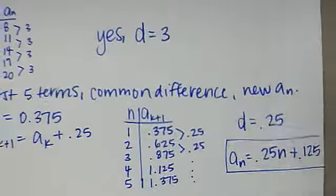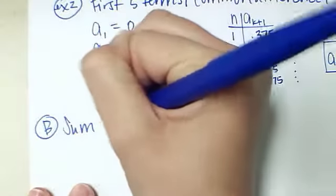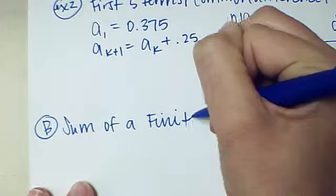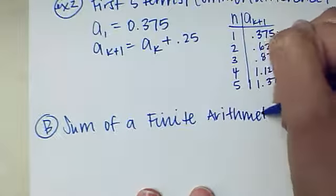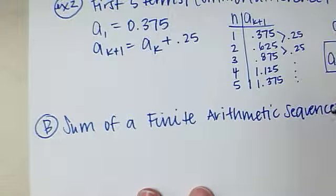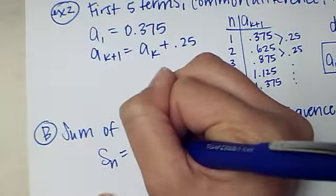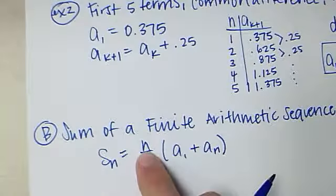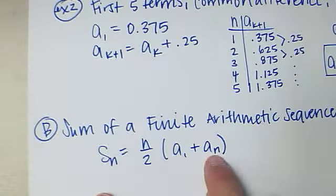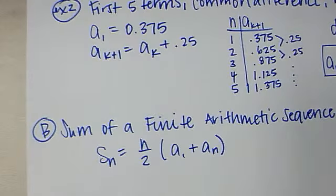Part B of what we need to look at is the sum of a finite arithmetic sequence. So, the sum S sub N is equal to N over 2 of A1 plus AN. So, I'm going to do the number of terms times the first term plus the last term of the sequence gives me the sum of a finite sequence. That's a formula that you will be given, but you need to know how to use it.